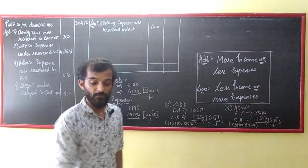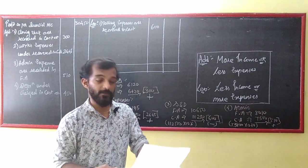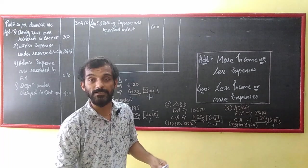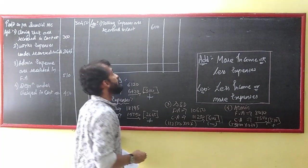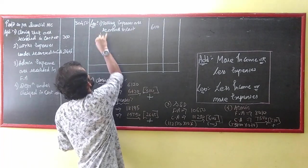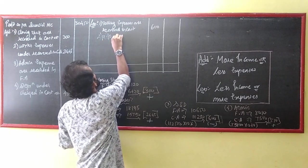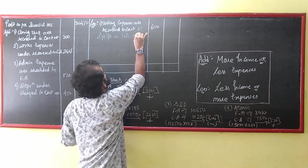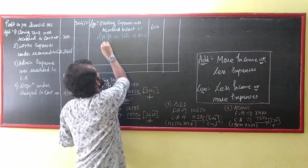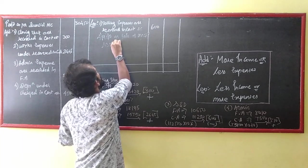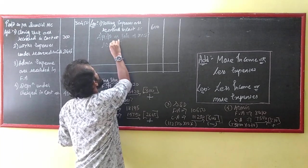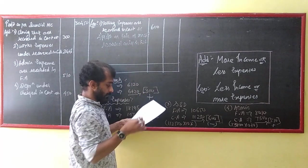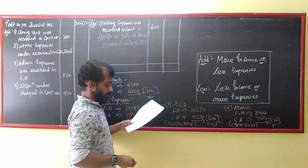Profit on sale of machinery — 3,900 — is recorded only in financial accounts, not in cost accounts. Since it increases FA profit, we must deduct it in the reconciliation. So less: profit on sale of machinery — 3,900 — only in financial accounts.